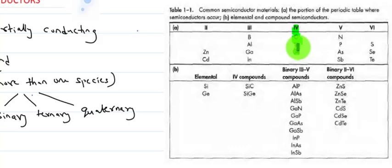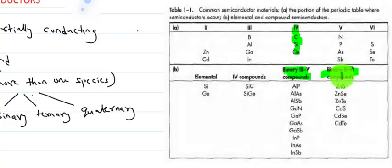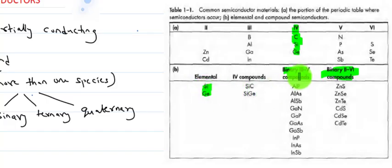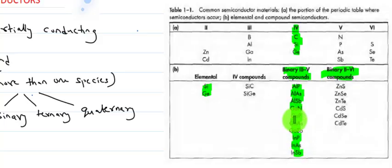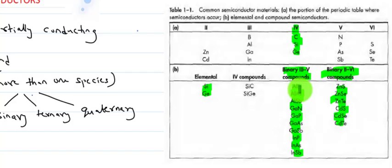Carbon is not included. For the fourth column, the valency will be four. Silicon and germanium are the main elemental semiconductors. Binary 3-5 compounds and binary 2-6 compounds are also examples of compound semiconductors. Examples of binary 3-5 compounds include aluminium phosphide, aluminium arsenide, gallium nitride, gallium phosphide, and indium phosphide. Examples of binary 2-6 compounds include zinc sulfide and cadmium sulfide.